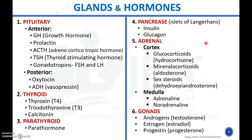Coming to the glands and hormones present in the body, there are six major glands: pituitary gland, thyroid gland, parathyroid gland, pancreas, adrenal gland, and gonads. The anterior pituitary gland releases growth hormone, prolactin, adrenocorticotropic hormone (ACTH), thyroid stimulating hormone (TSH), and gonadotropins like follicle stimulating hormone (FSH) and luteinizing hormone (LH).